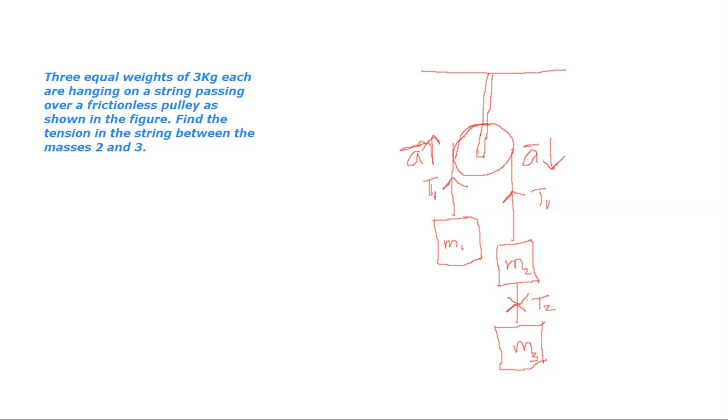The acceleration of this system is downwards on the right side. The system is moving clockwise. On the right side, the system is moving downwards and on the left side, M1 is moving upwards.